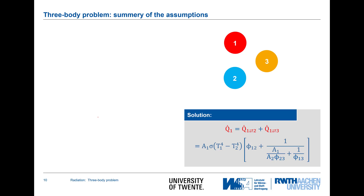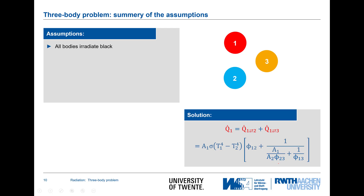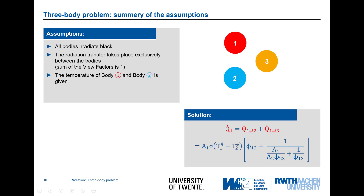To generalize: I have three objects, one, two, three, and I get this formula with an expression of different view factors — all radiating black. To come to the solution: I took radiative transfer between these three bodies, radiation doesn't go anywhere else, the temperature of bodies one and two is known, and object three emits all received radiation energy — meaning it behaves adiabatically. In this case I get the expression with a plus sign and view factors including those to object three. I only get such a simplified equation because I assume that everything is black — that's the contribution of the wall that increases radiative exchange.